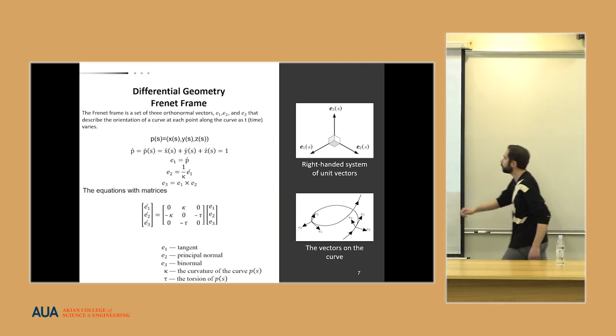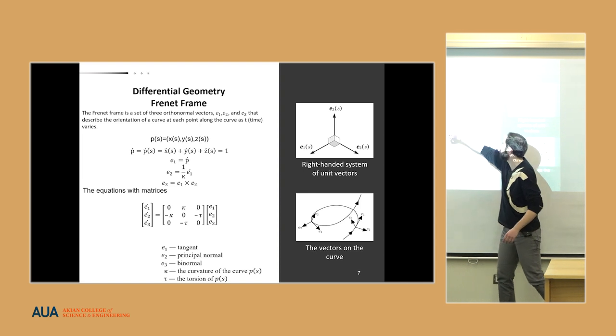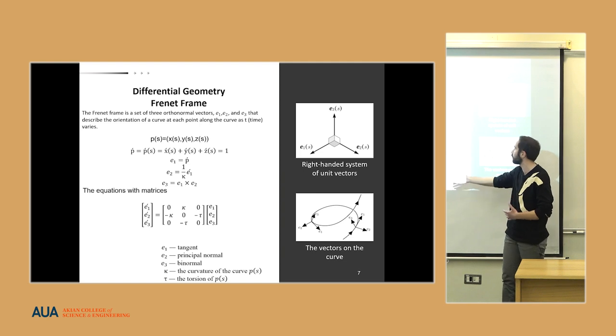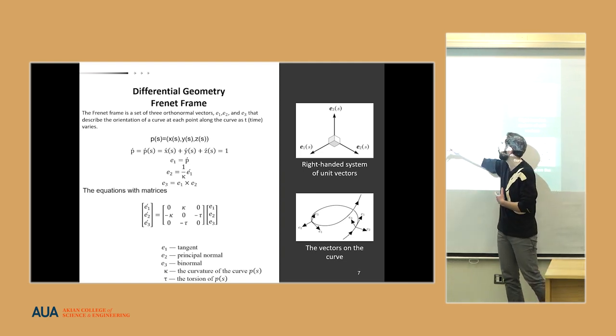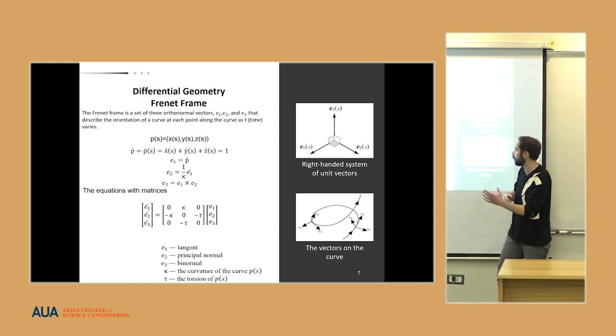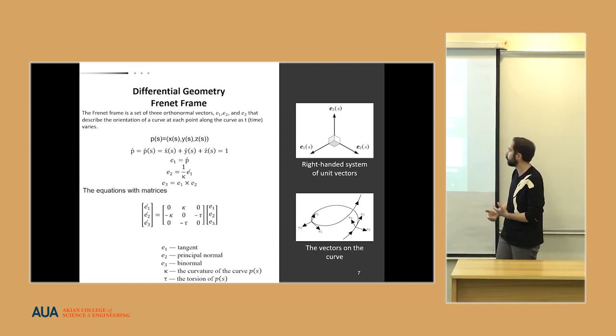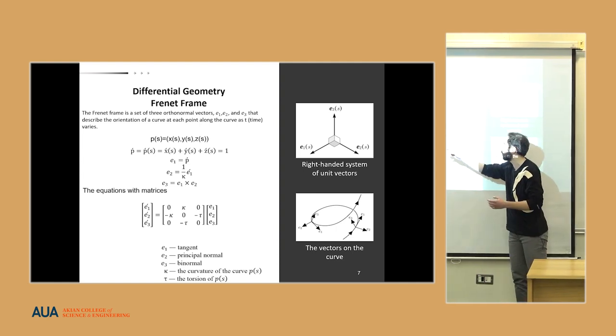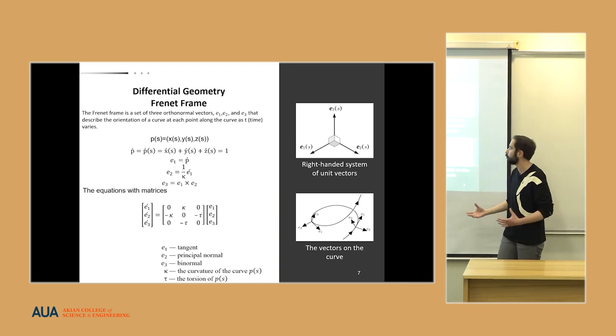Here we can see ps shows the position of a point along the x-axis, y-axis, and z-axis. Taking the derivative of a point, we can find the velocity, which equals e1. After some calculations, we can find e2, and the cross product of e1 and e2 gives us e3. For easier visualization, this is represented in matrices.